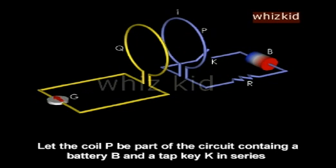Let the coil P be part of the circuit containing a battery B and a tap key K in series.